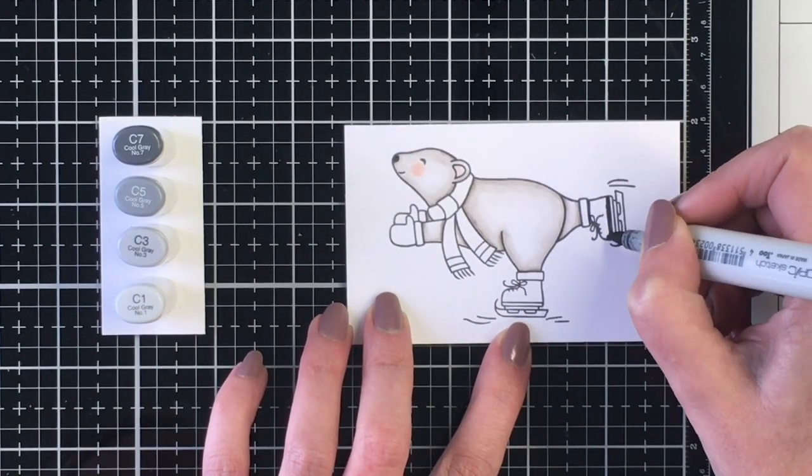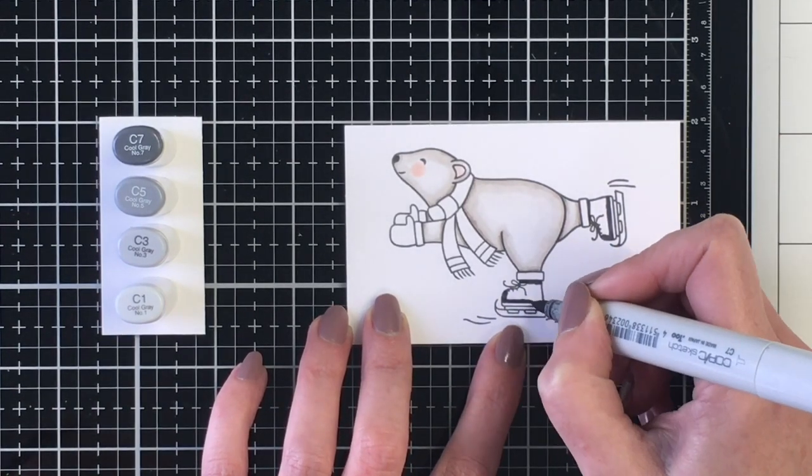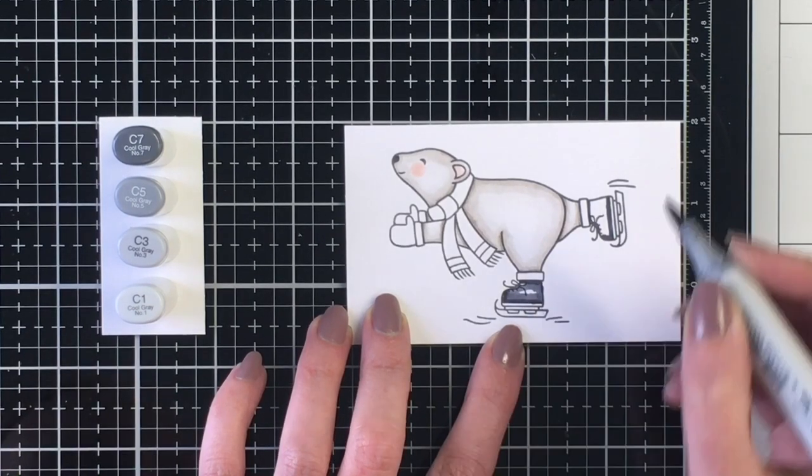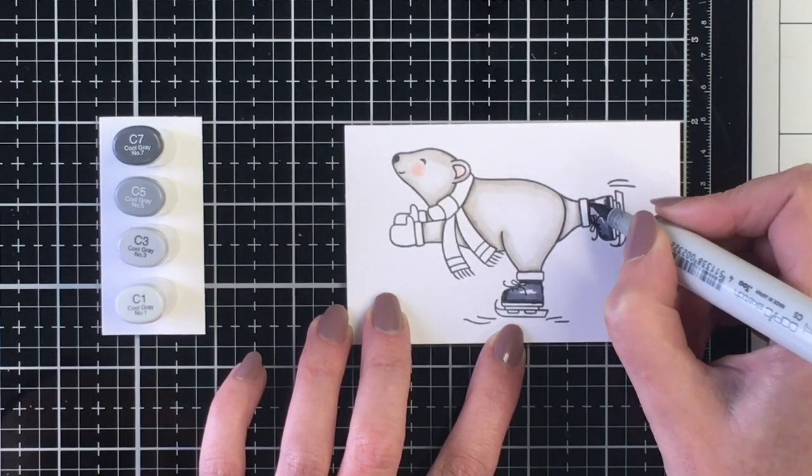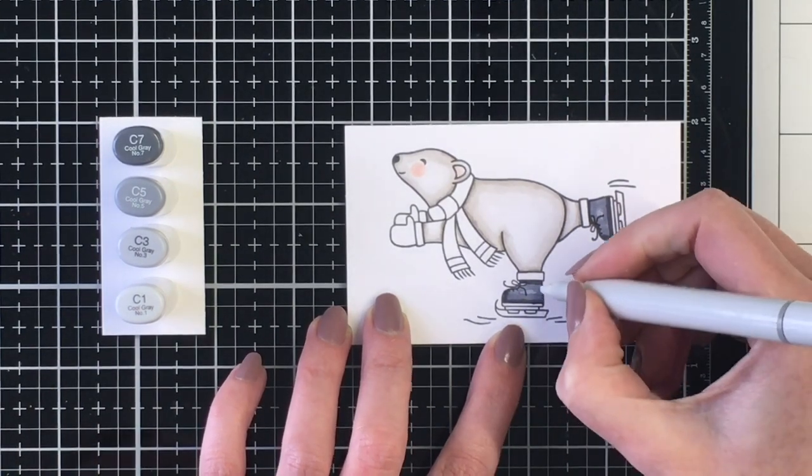Now for his nose and his skates, I'm using my C markers. So my darkest here is the C7, my darkest midtone the C5, my lightest midtone the C3, and then the C1, which I'm using very sparingly here.